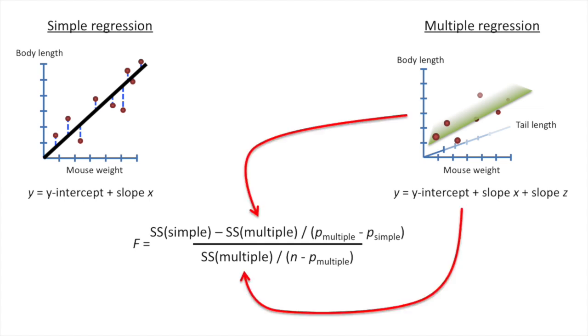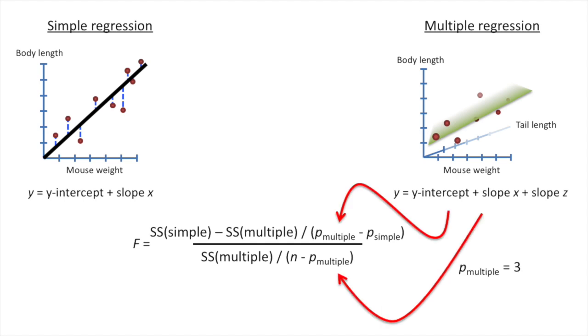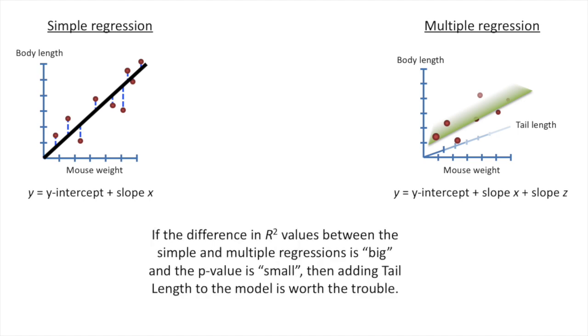And then we plug in the sums of squares for the multiple regression, and we plug in the number of parameters in our multiple regression equation. BAM! If the difference in R-squared values between the simple and multiple regression is big and the p-value is small, then adjusting tail length to the model is worth the trouble.